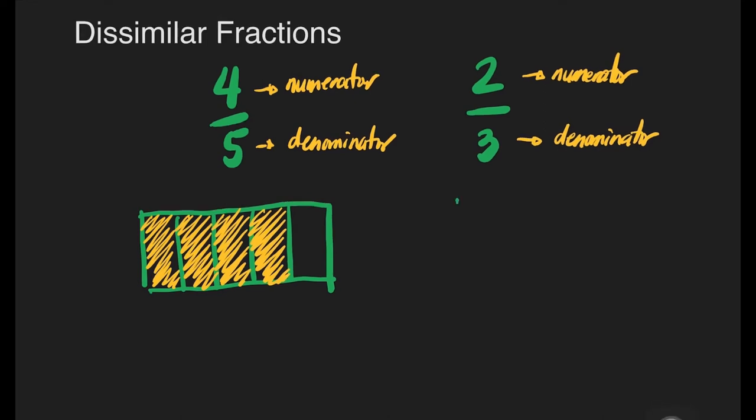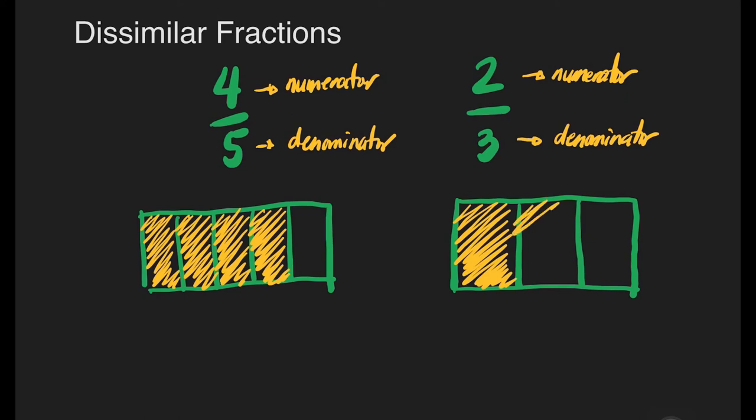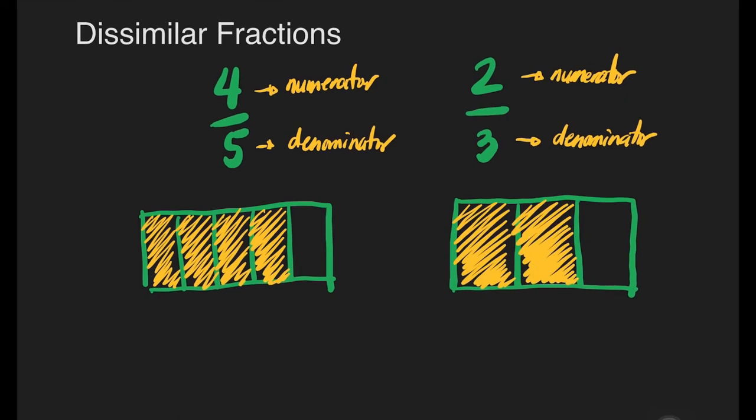Now let us have 2 thirds. It is divided into 3 equal parts and then 2 parts are shaded. 4 fifths and 2 thirds are examples of dissimilar fractions.